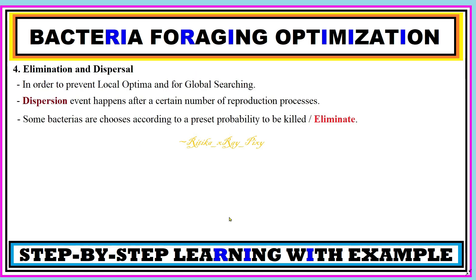The last step is elimination and dispersal. In order to prevent local optima and enable global searching, elimination and dispersal is used. A dispersal event happens after a certain number of reproduction processes, and some bacteria are chosen according to a preset probability to be killed or eliminated.